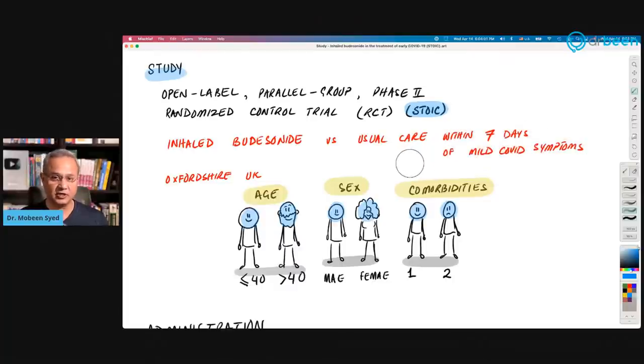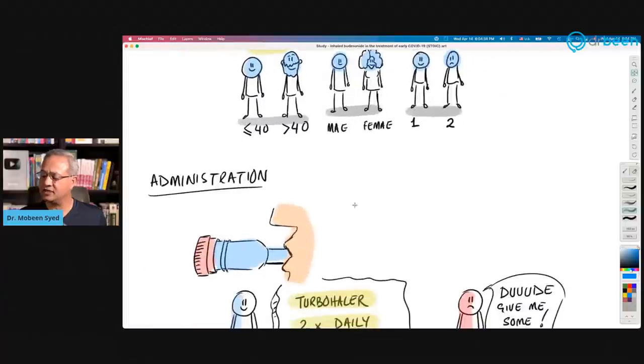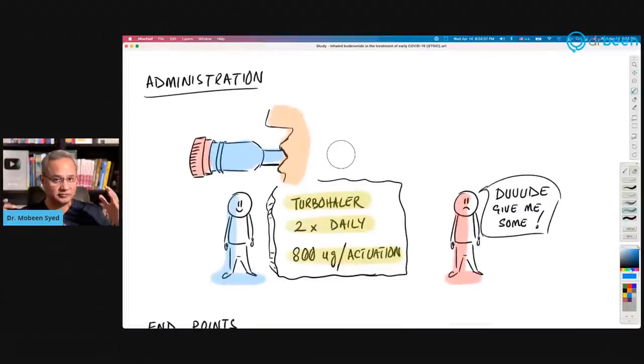So this is an outpatient study. So patient who is presenting with mild symptoms, they divided them in two separate groups. One group was given in addition to the usual care, the budesonide and the other group was given usual care. What they did was they studied folks by age, lesser than 40, greater than 40, equal to 40, by sex, male, female, and by comorbidities, people having one comorbidity versus two comorbidities and so on.